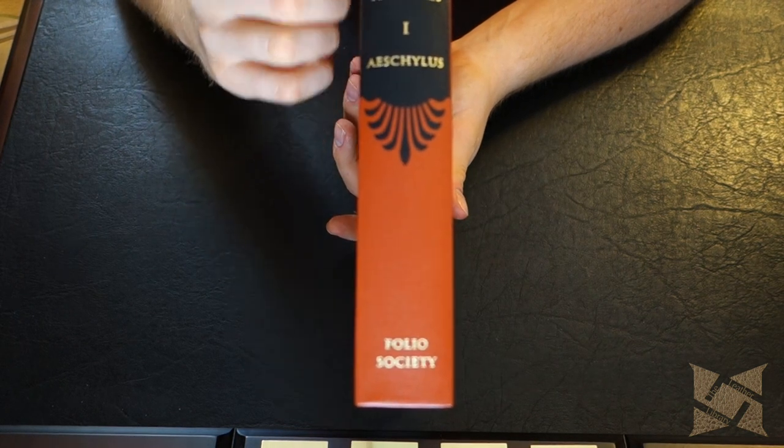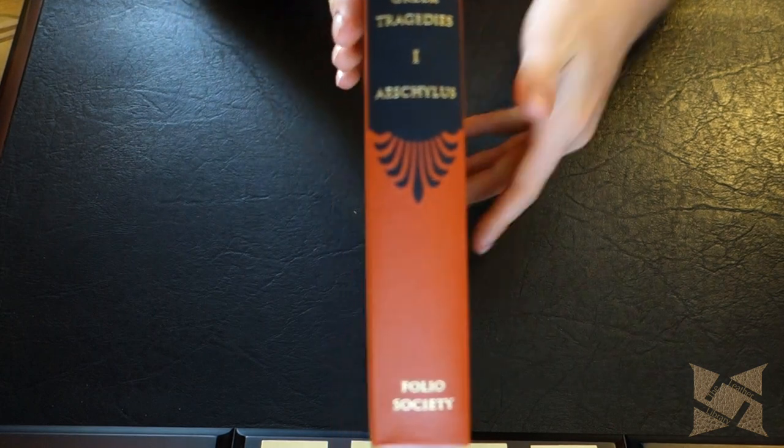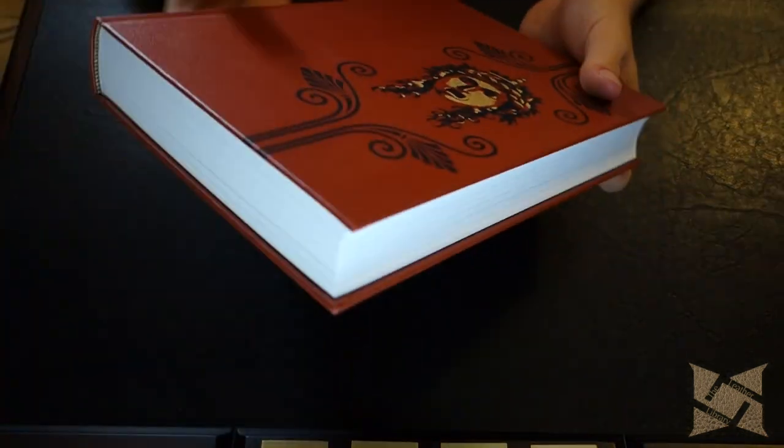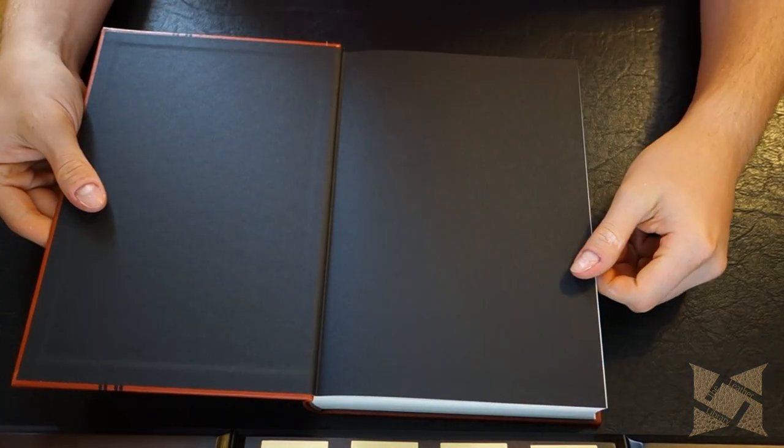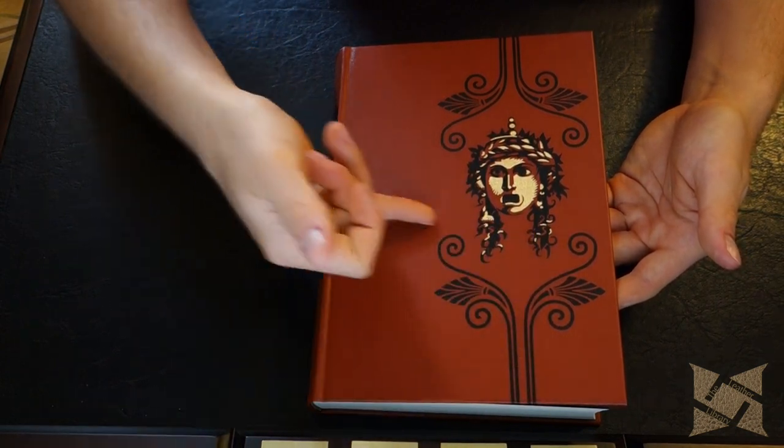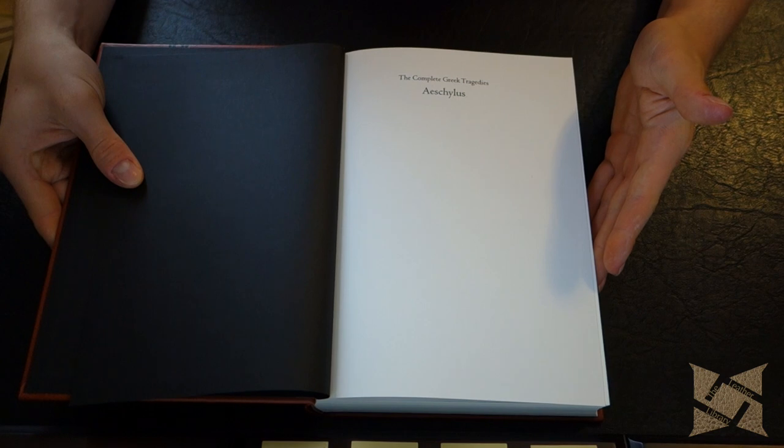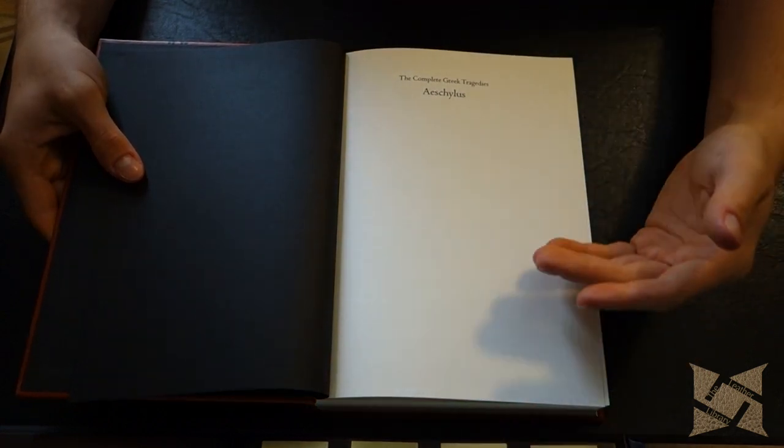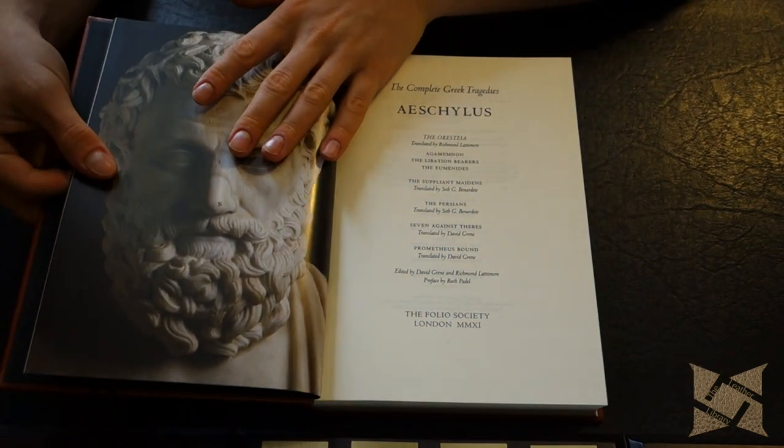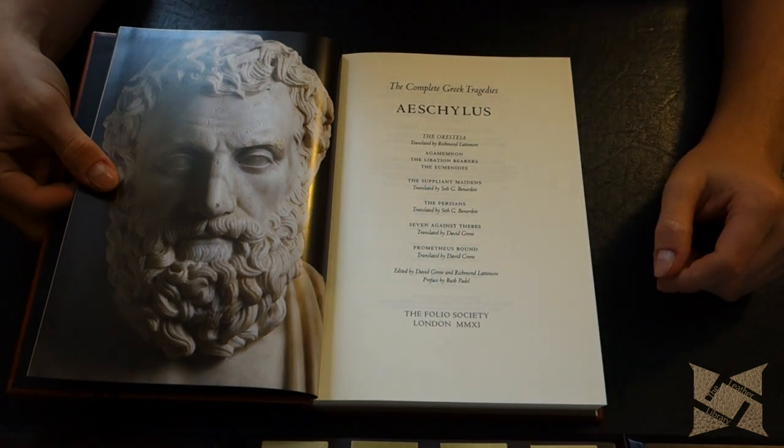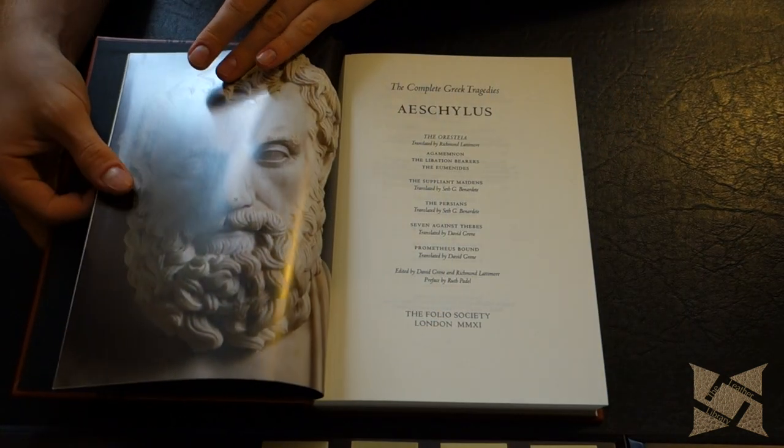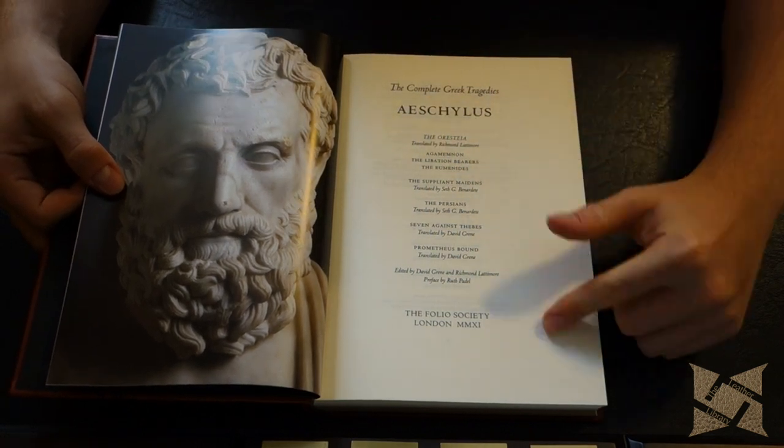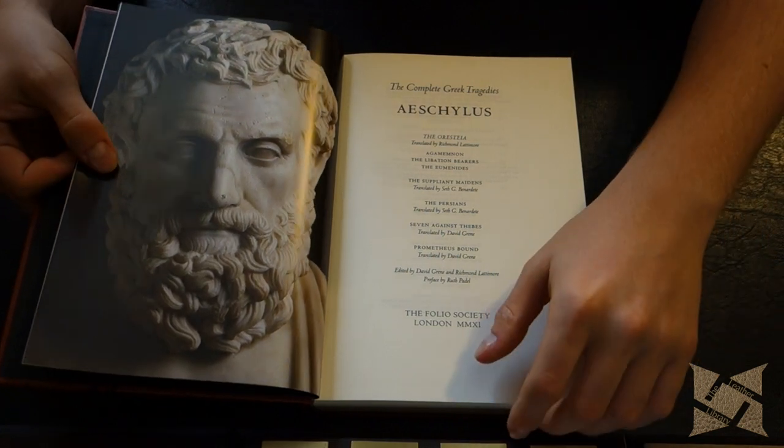Let's jump right into this. Aeschylus, the complete Greek tragedies, volume one Aeschylus. Plain back, they all have the plain back. No gold gilding or ribbon markers. You got the plain black endpapers which contrast with the black on the orange. The paper color is not pure white, it's a little bit off-white, like a creamy color. All printed on acid-free neutral paper. You got the table of contents and a nice marble bust here on its own individual sheet of photo paper.